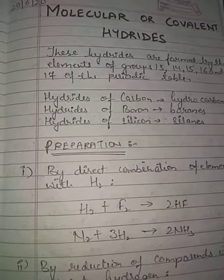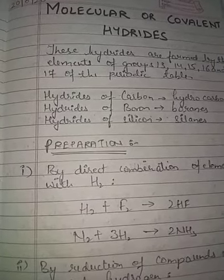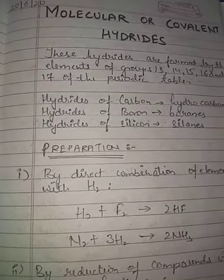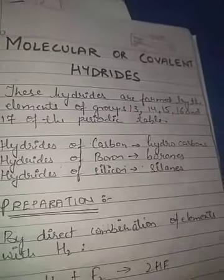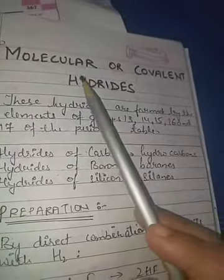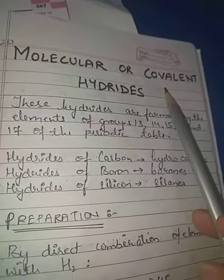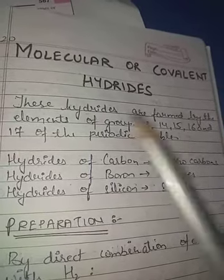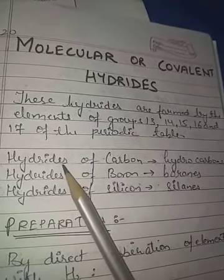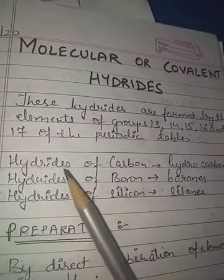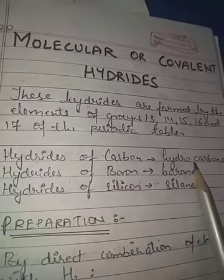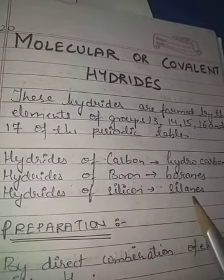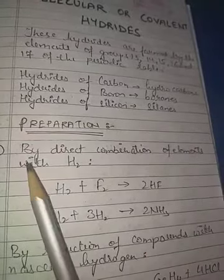In a previous video we studied about ionic hydrides. Today we will study about molecular or covalent hydrides. These hydrides are formed by elements of group 13, 14, 15, 16, and 17. For example, carbon hydrides are called hydrocarbons, hydrides of boron are called boranes, and hydrides of silicon are called silanes.